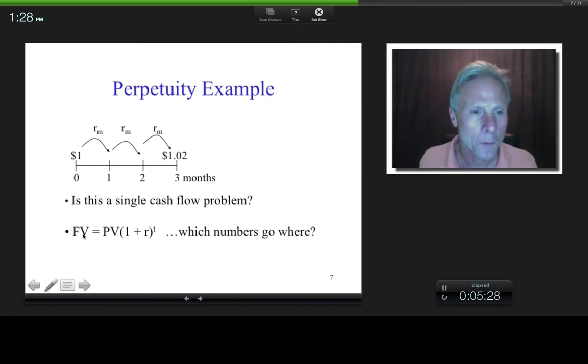Using the only single cash flow formula that exists, then what would go there? What would I put in for future value? Remember, that's the earlier or the later value. That's the later value, right? So that would be $1.02. What would I put in for present value? That's the earlier value, so that's the dollar. And what would I put in for my effective rate here? That's what we're trying to solve for, right? What effective monthly rate exists such that $1, after three months of monthly compounding, grows into $1.02?